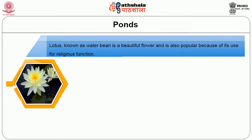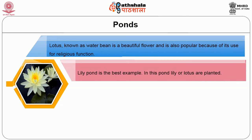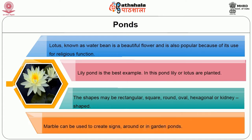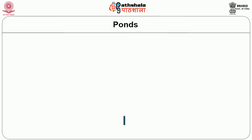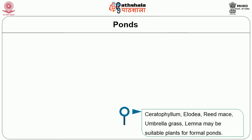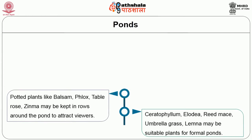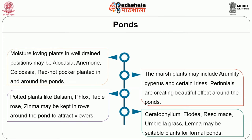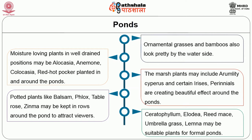Lotus, known as water bean, is a beautiful flower and is also popular because of its use for religious functions. The lily pond is the best example, where lily or lotus are planted. The shapes may be rectangular, square, round, oval, hexagonal or kidney-shaped. Marble can also be used to create signs around or in garden ponds. Ceratophyllum and Elodea are marsh plants for formal ponds. Potted plants like balsam, phlox, table rose and zinnia may be kept in rows around the ponds to attract viewers. The marsh plants may include Arum lily, cypress and Spiderwort iris. Perennials create a beautiful effect around the ponds. Moisture-loving plants in well-drained positions may include Alocasia, Caladium, Colocasia and Ruellia, planted in and around the ponds. Ornamental grasses and bamboos also look pretty by the waterside.